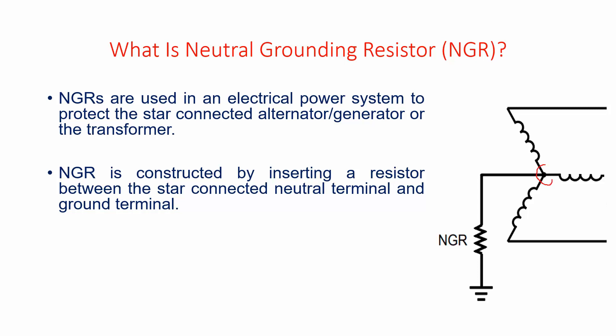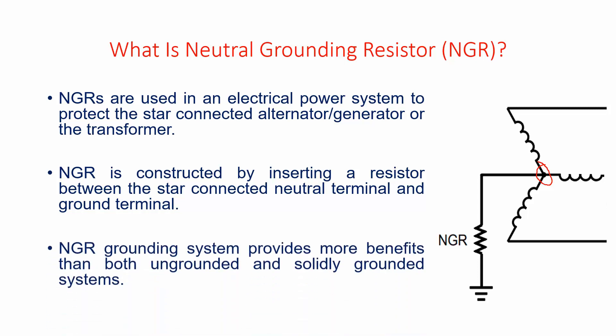This point which is connected to ground through a resistor - so this resistor is called neutral grounding resistor or NGR. Neutral grounding resistor type of grounding system provides more benefits compared with ungrounded as well as solidly grounded systems.